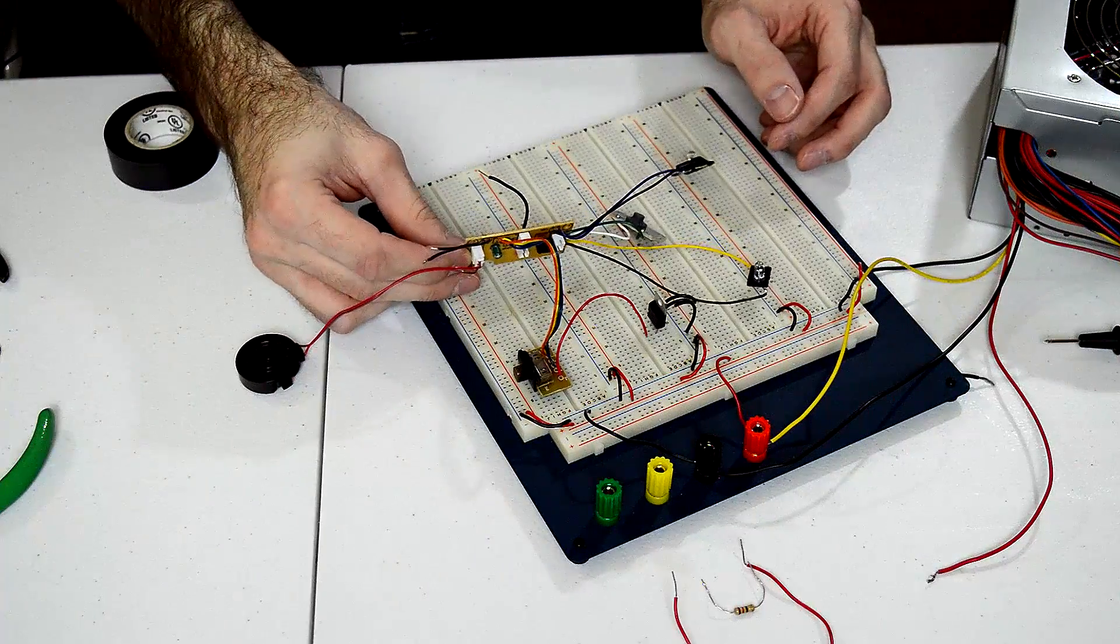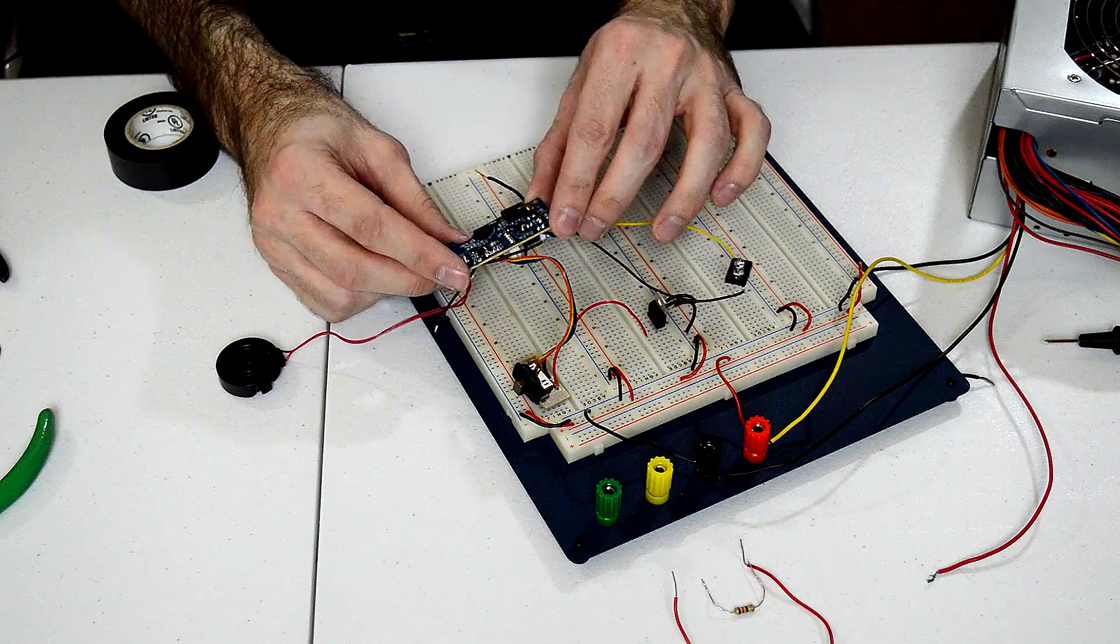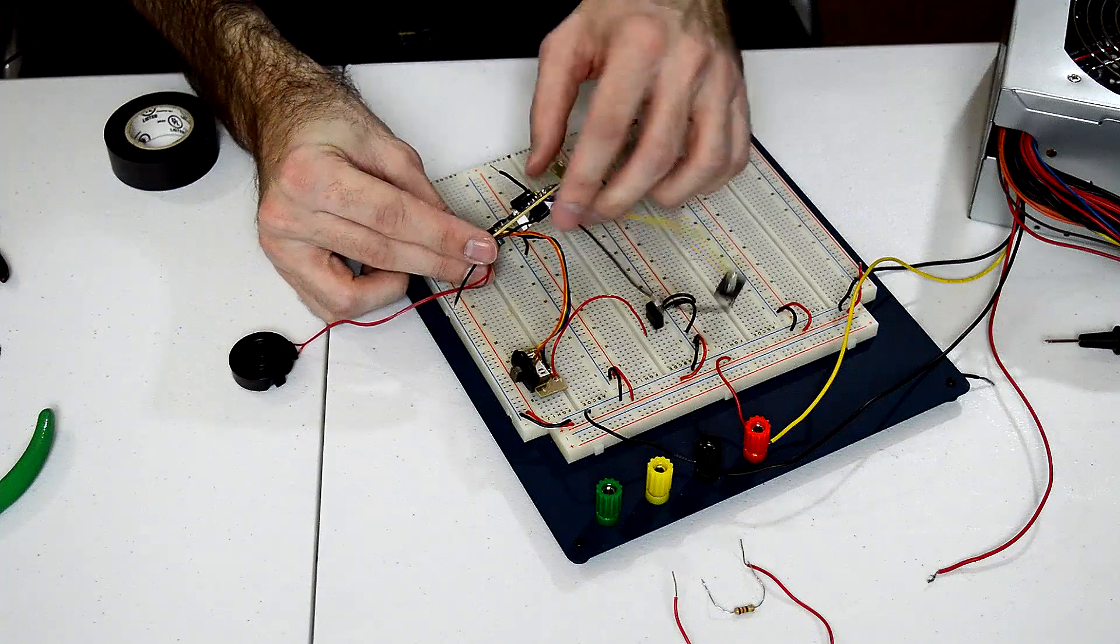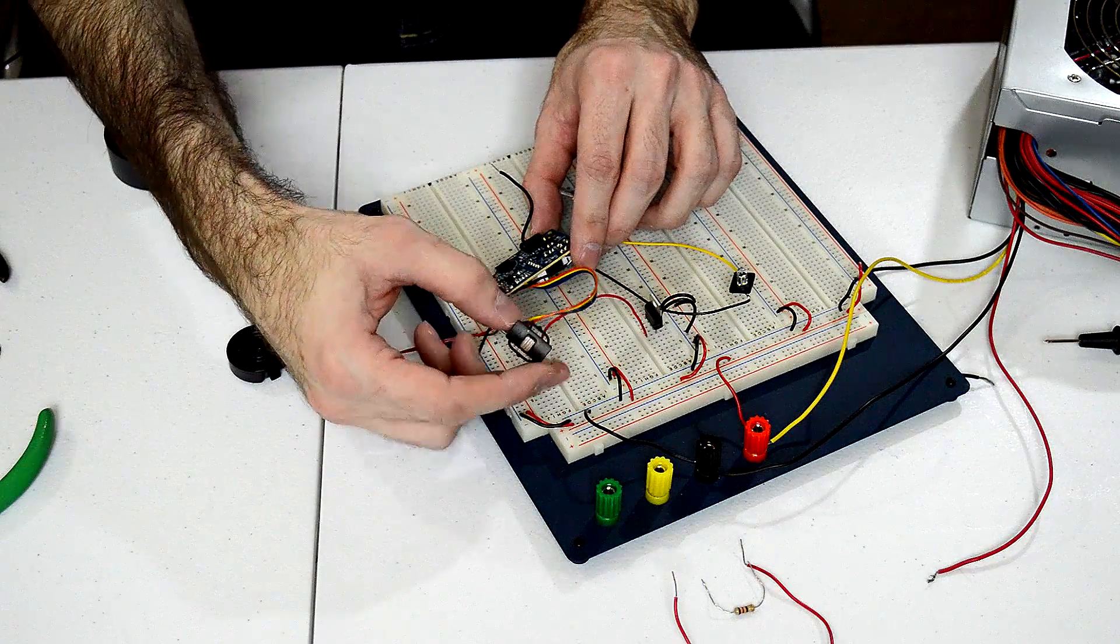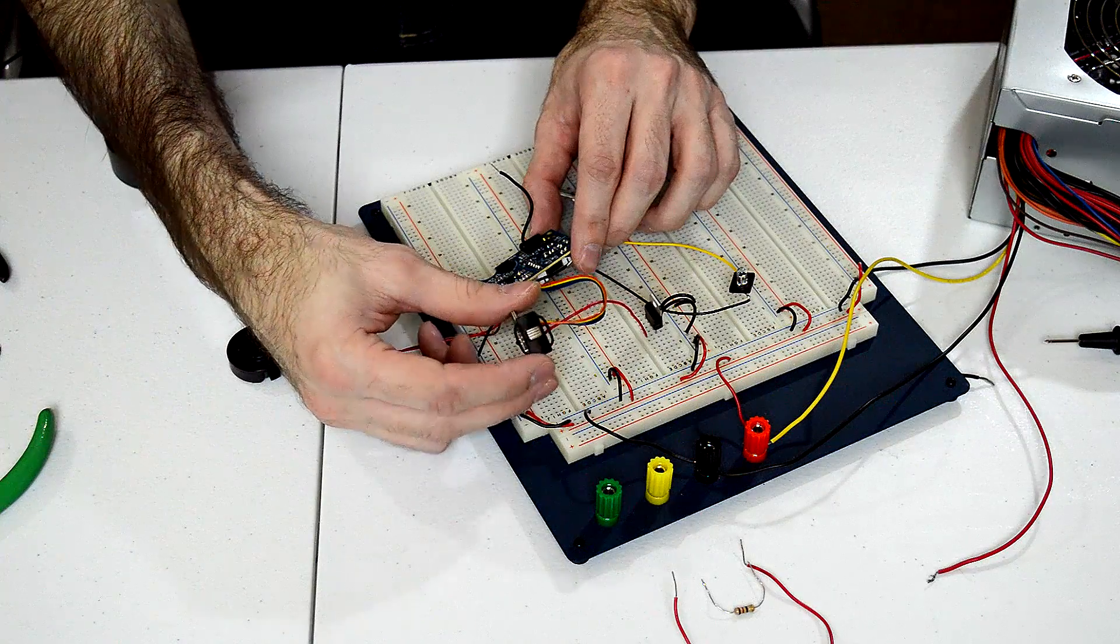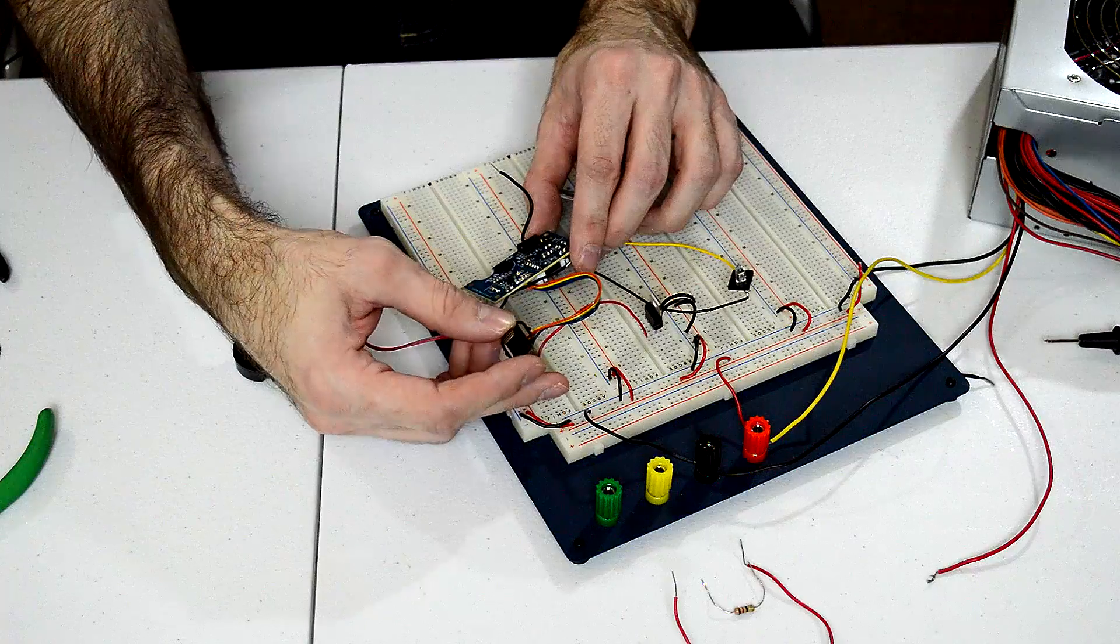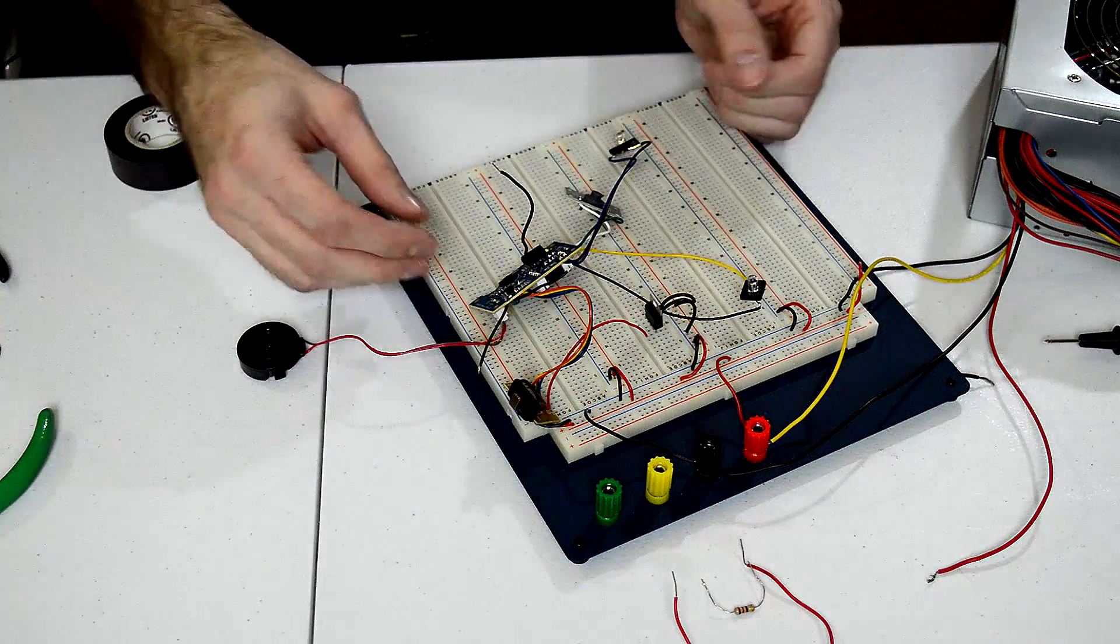This is the main board from our Kylo Ren lightsaber, and it takes a 5 volt input voltage. We're using our 7805 voltage regulator to supply voltage through this switch. This is a three stage switch - there's off, demo, and full on. We'll show you what each one of those does and how to hook it up.